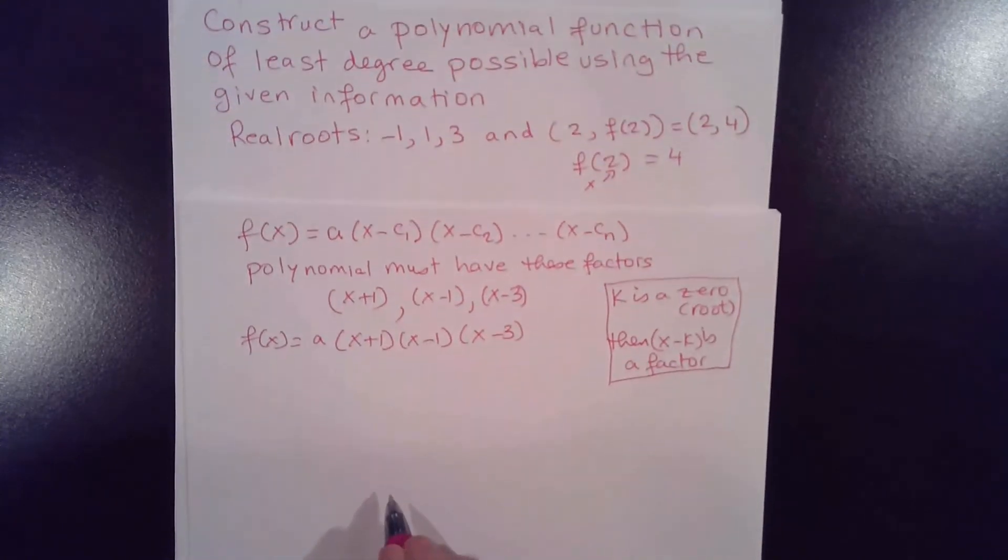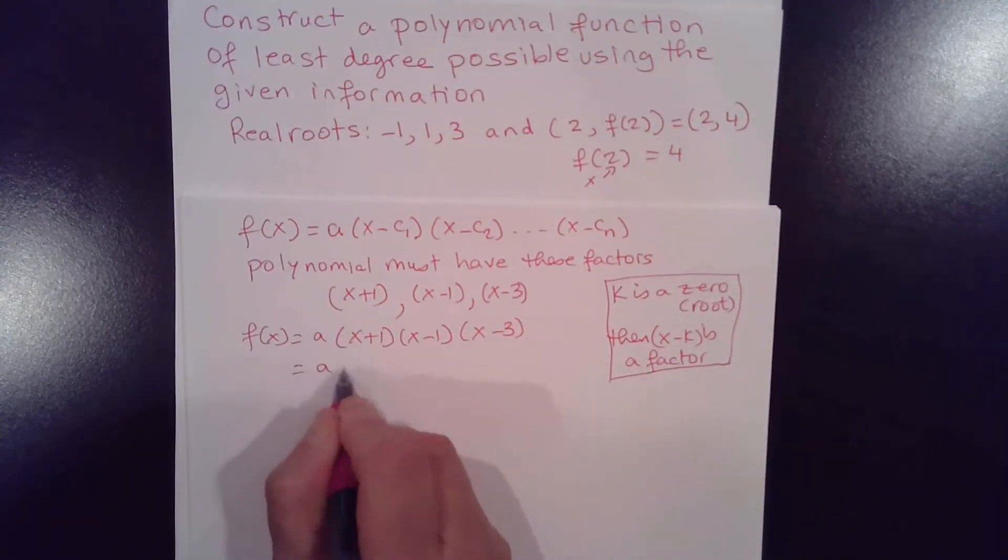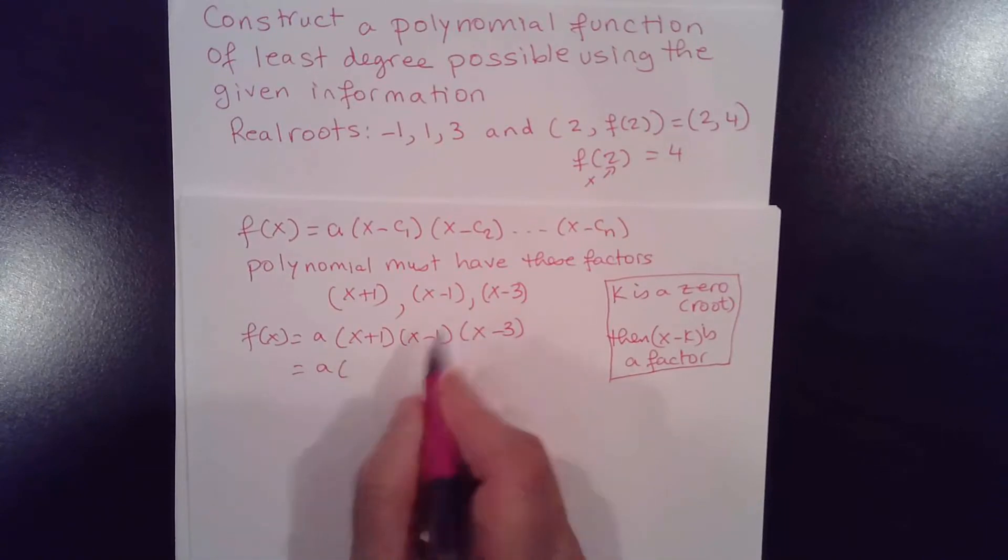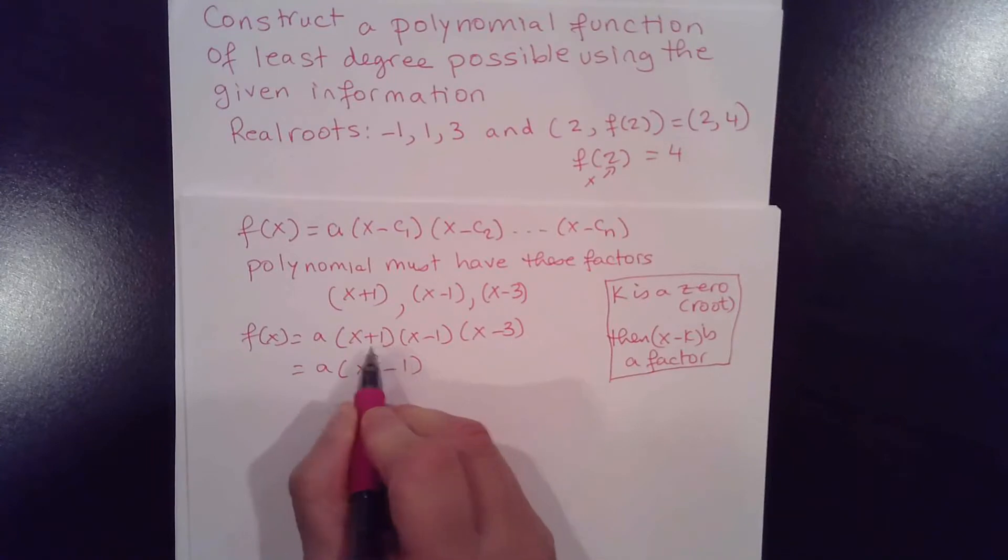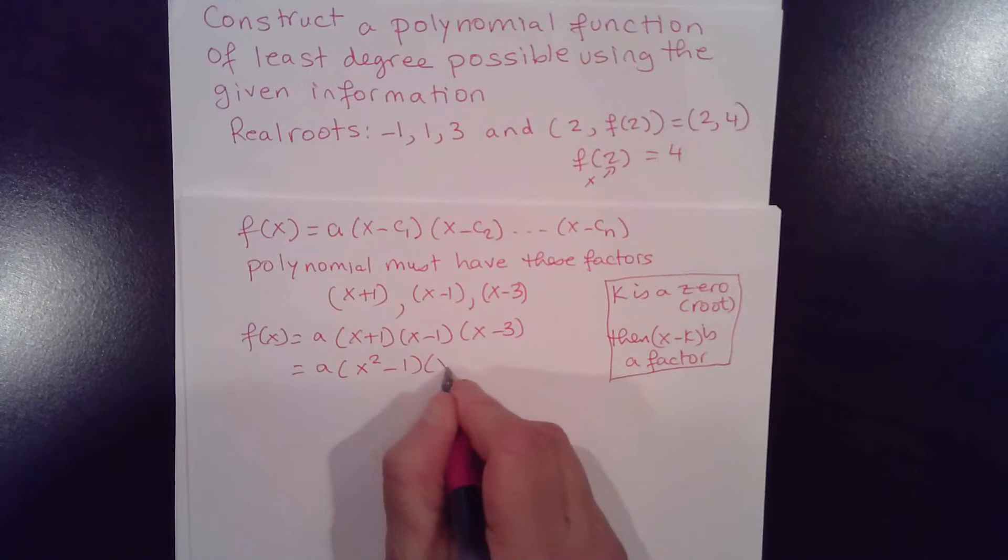So we need to distribute here, x plus 1 times x minus 1, that gives me x squared minus 1. If you recall, this is a product of the sum and difference of two numbers, the same two numbers, times x minus 3.